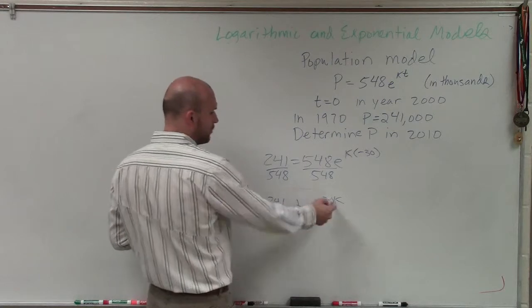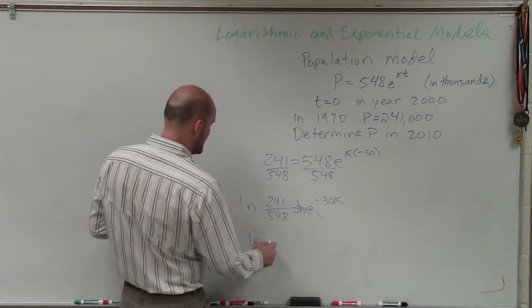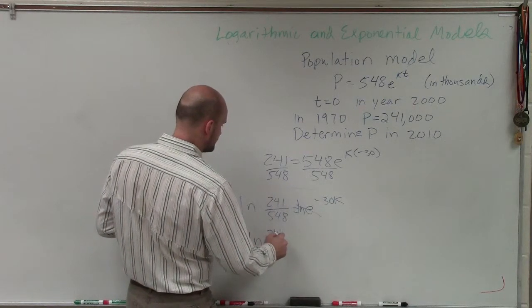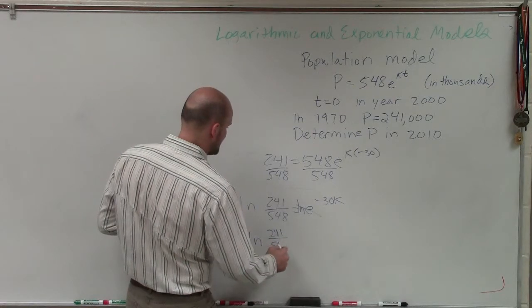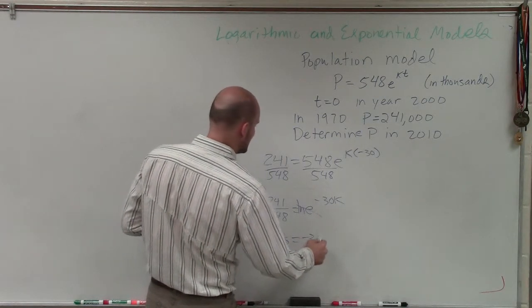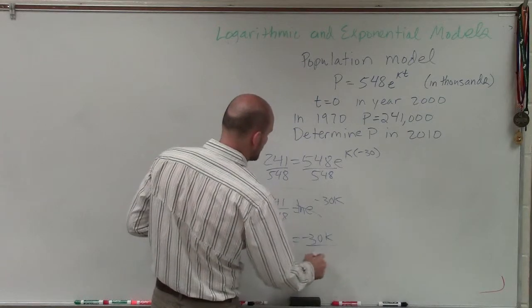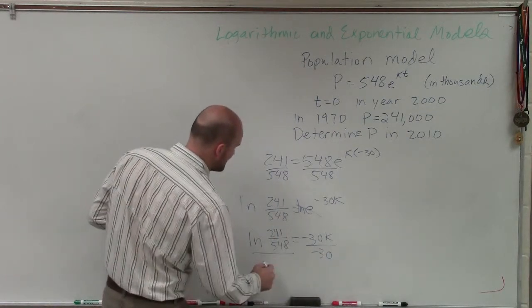By taking the ln of both sides, that exponent now goes to 1, leaving me with ln of 241 divided by 548 equals negative 30k. So to solve for k, I need to divide by negative 30.